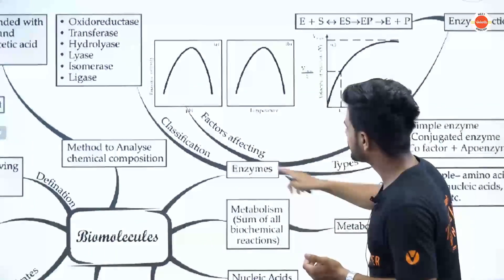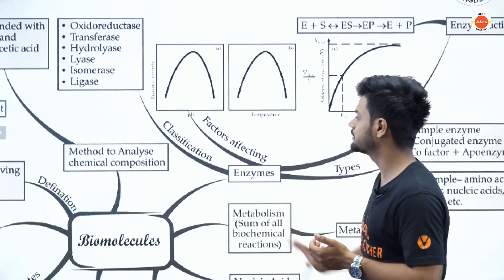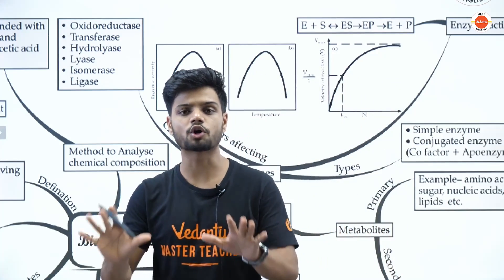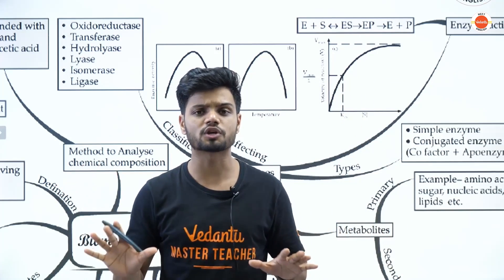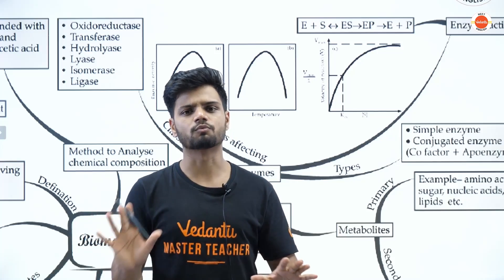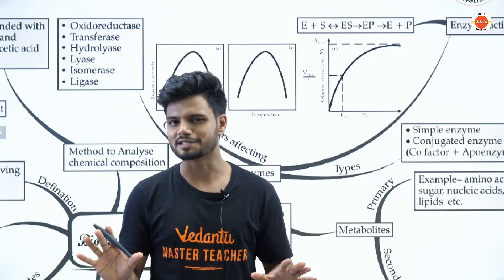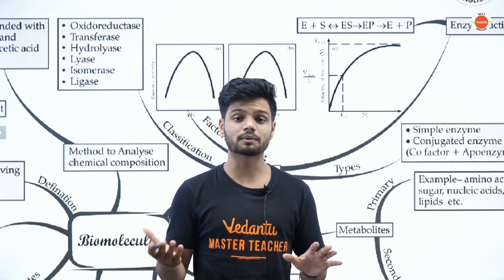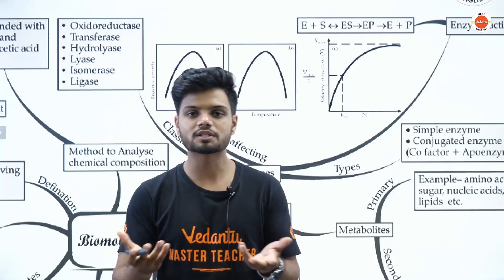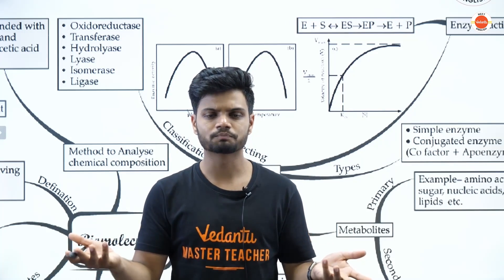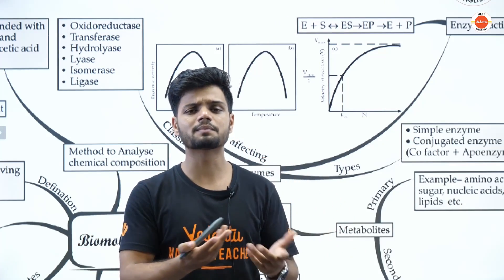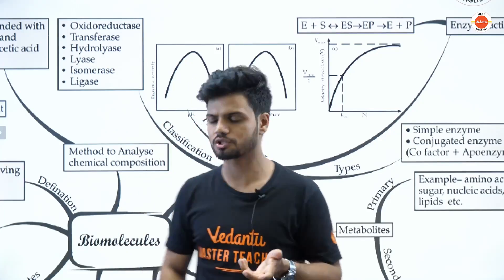Then we have factors affecting enzyme activity. Every enzyme needs an optimum temperature and pH, beyond which it does not work. For example, if temperature becomes very high, the enzyme will denature. If temperature becomes very low, the enzyme becomes inactive. The same effect applies to pH.